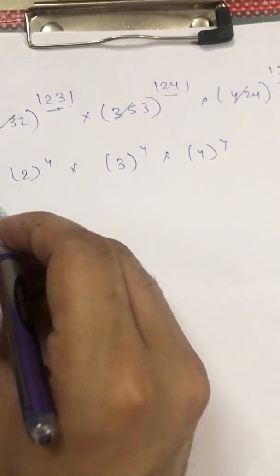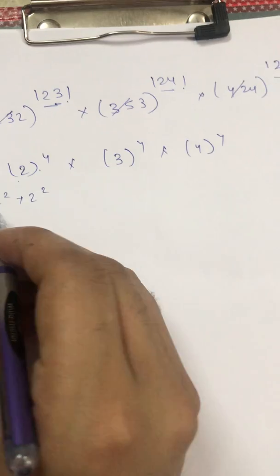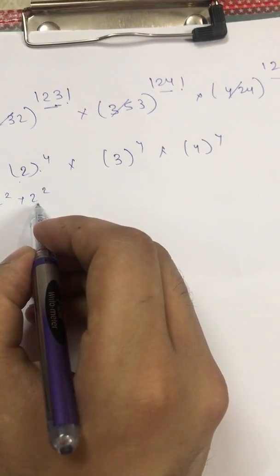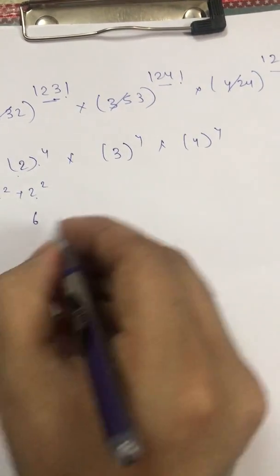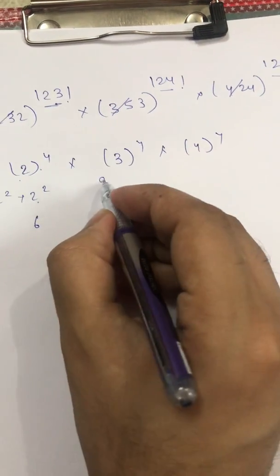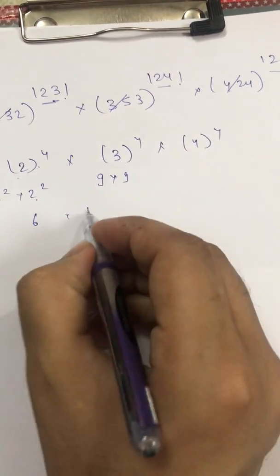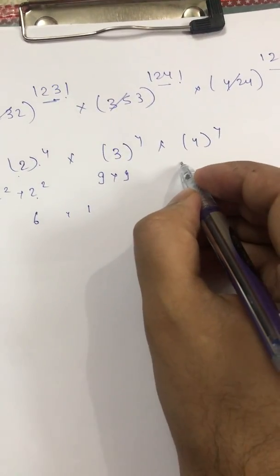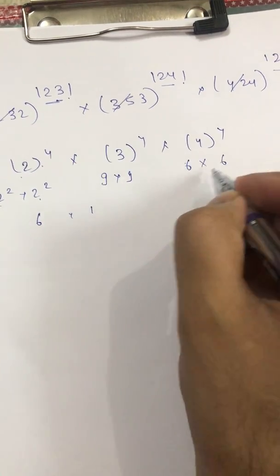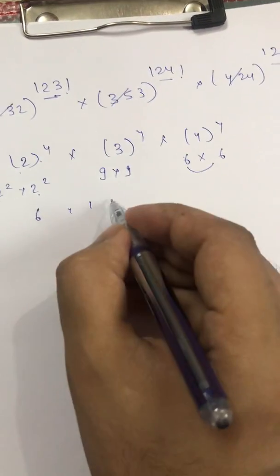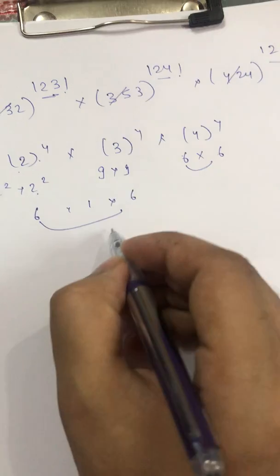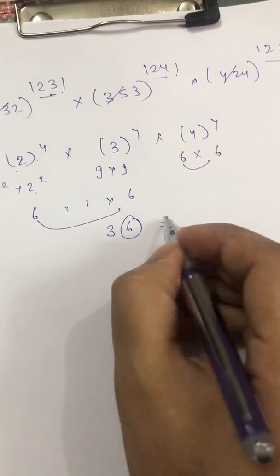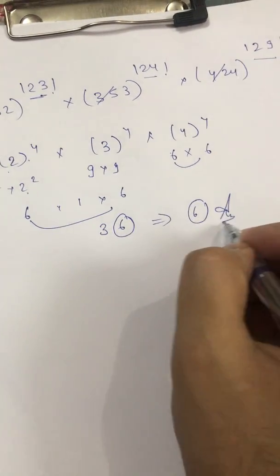2 raised to the power 4 means can I write it as 2 square or 2 square that is 4 into 4 that is 16 so 6 will be there. 3 raised to power 4 is 81 so 1 will be there. 4 raised to power 4 is 256 so 6 will be there. 6, 1, 6 so 6 into 1 is 6, 6 into 6 is 36 so unit digit will be 6 and that leads to my answer.